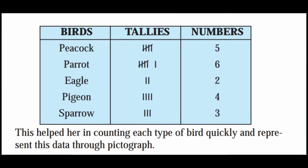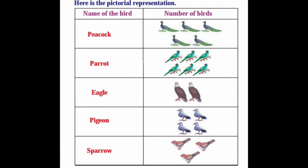Now let's see the number of birds in an album using a pictograph. Each group of tally marks counts as 5. The pictograph shows the name of the bird and the number of birds: Peacock 5, Parrot 6, Eagle 2, Pigeon 4, Sparrow 3. This is the pictorial representation.